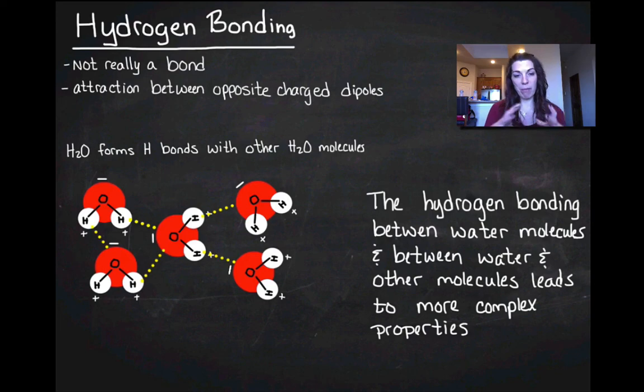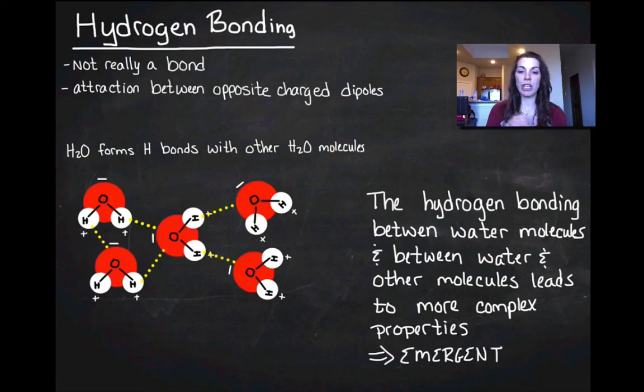And those complex properties, properties that are more complicated than simply the hydrogen bonding or the polarity, we call those emergent properties. Basically, it just means that they're really greater than the sum of the parts. So we're making something more complicated from something very simple. So we're going to go ahead and we're going to move on and start talking about those emergent properties. I just wanted to do a review of the basics of hydrogen bonding and polarity. If you have any questions, please come and see me or give me an email.